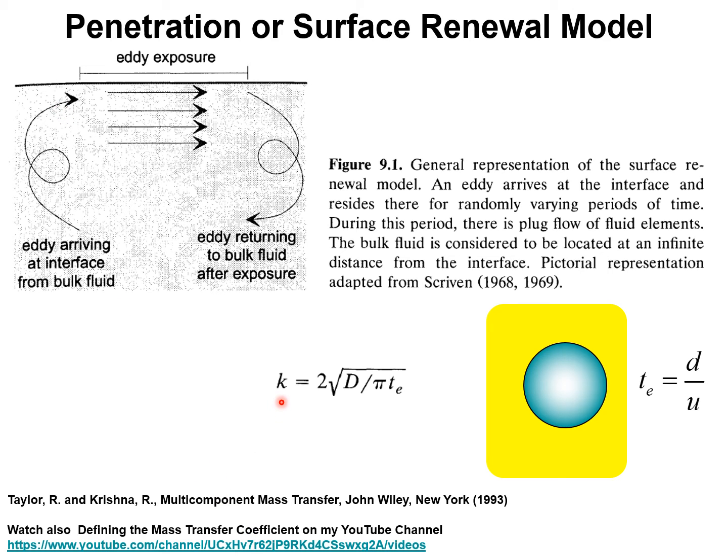The expression for the mass transfer coefficient is written as follows: equal to two times square root of the fixed diffusivity divided by pi divided by the average time of exposure. Let's see how this expression can be used to calculate the mass transfer coefficient.